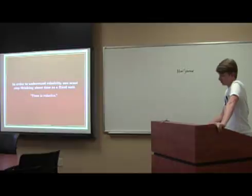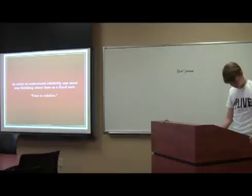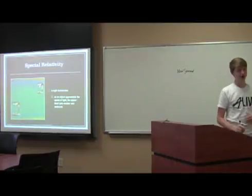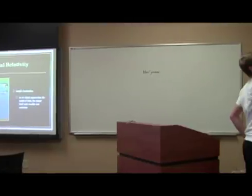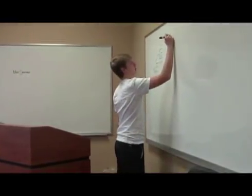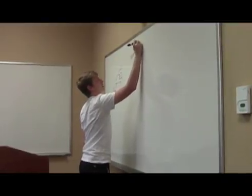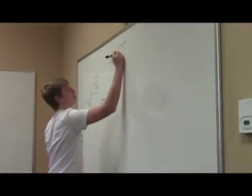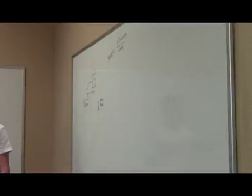And in order to understand relativity, one must stop thinking about time as a fixed unit because time itself is relative. In order for that to actually work, the reason why it looks like the top person's is going slower per se, is because distance is directly proportional to the time. So if the distance is doubled, then the time it takes for the actual light to bounce between each one is doubled. Since the distance is increased, time itself has to be increased.